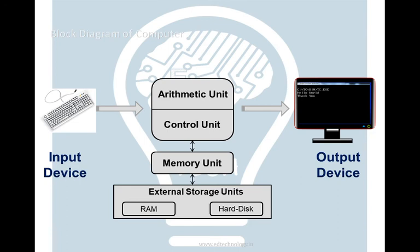The difference between primary and secondary memory is that primary memory communicates with the processor directly, whereas secondary memory requires primary memory in order to communicate. Input devices are all devices used to provide input — not only the keyboard; it can also be a microphone like the one being used to record right now. Output devices include speakers and printers. So this is how the block diagram of a computer looks.